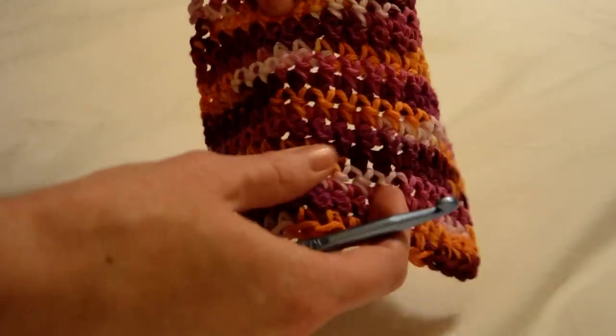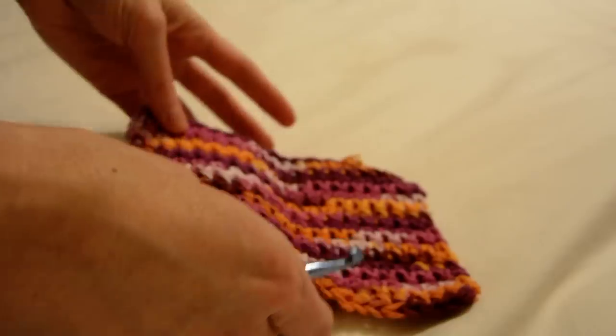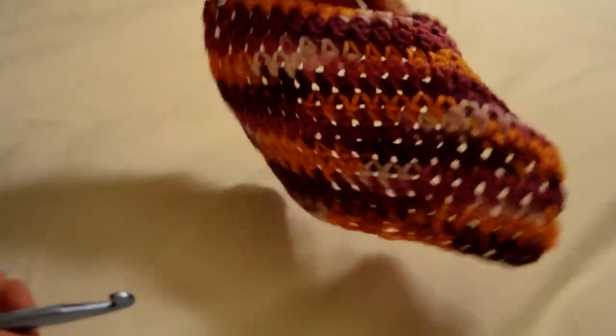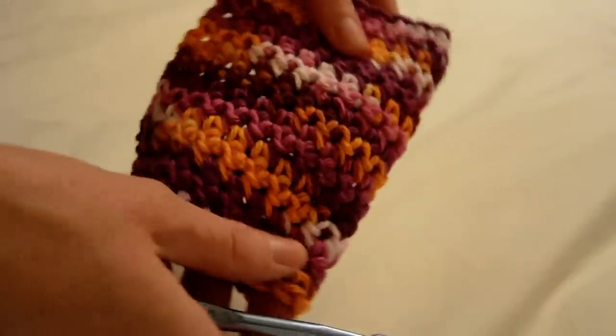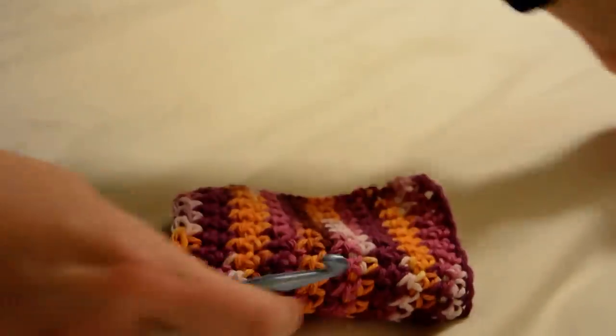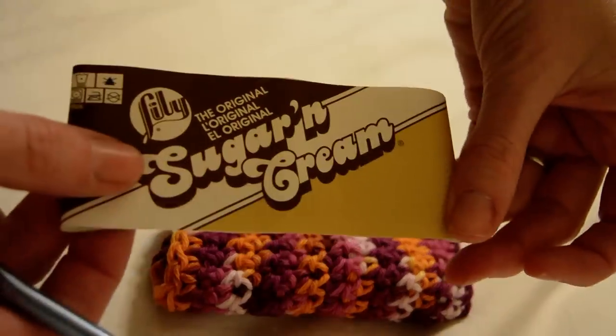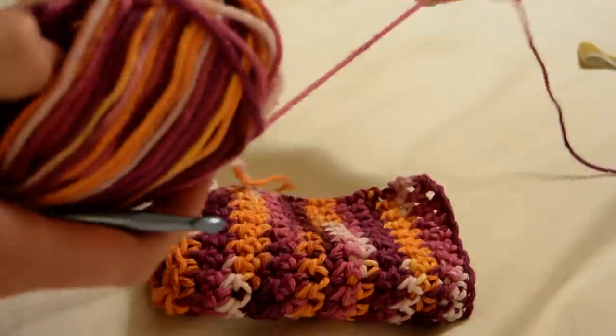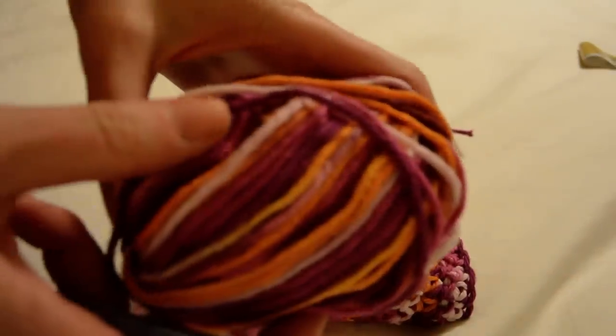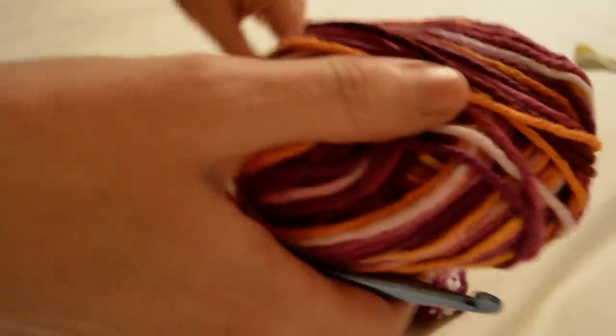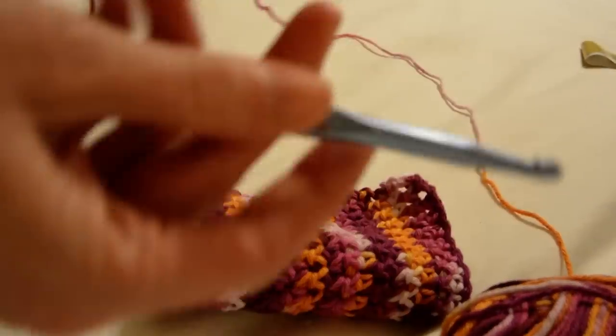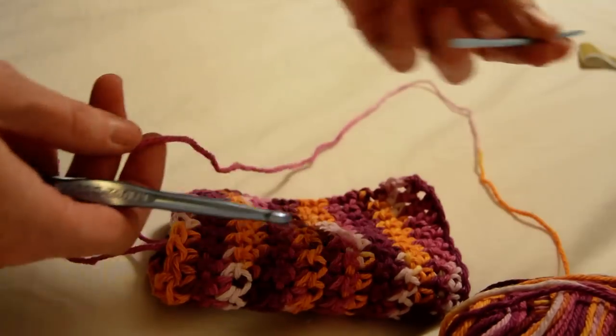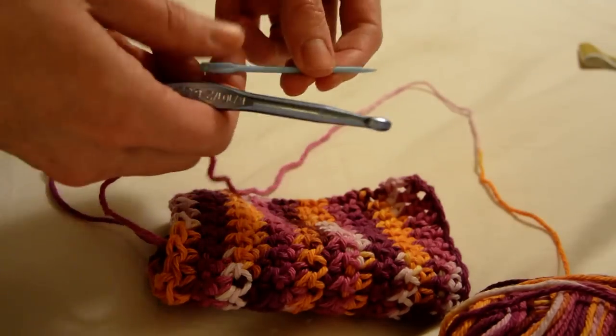That's how I learned how to crochet, by watching tutorials and just stopping and rewinding over and over again. So this is good for one of your first projects. I used Sugar and Cream cotton yarn. It's really absorbent, good for wash rags, and the color is Batik. I'm using a size K crochet hook, and you'll need a needle and scissors.